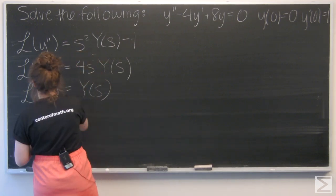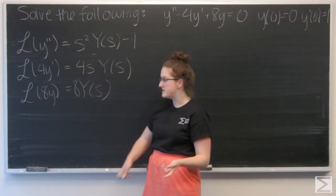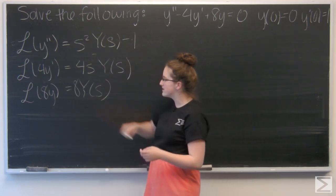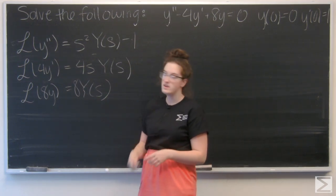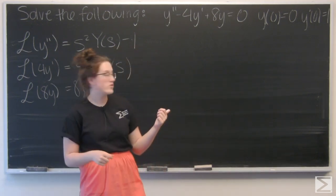And then Laplace transform of 8y, that's easy. 8 is a constant, it's going to carry through, and then I've just got 8 Y(s). So let's go ahead and put each of these Laplace transforms back into that original second order equation.